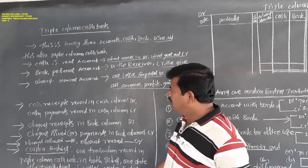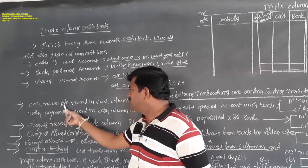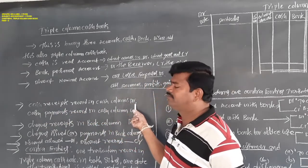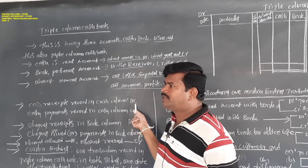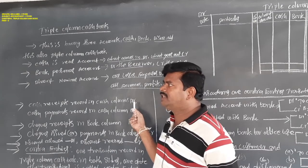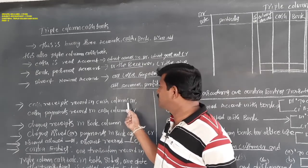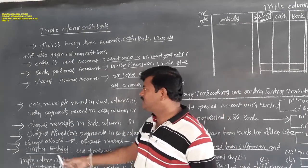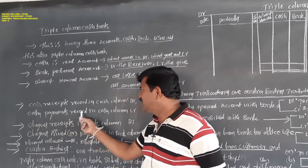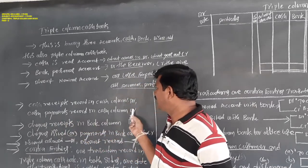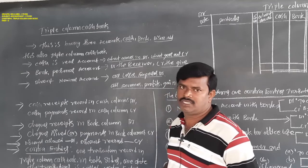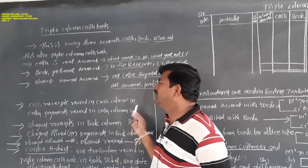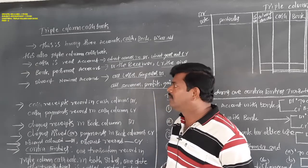In triple column cash book, cash receipts are recorded in the cash column debit side. If it is a cash receipt, it must be recorded in the cash column only on the debit side. Cash payments must be recorded on the credit side of the cash column only.